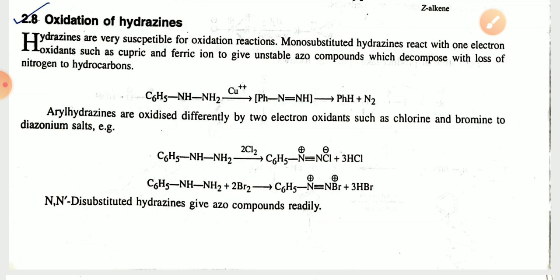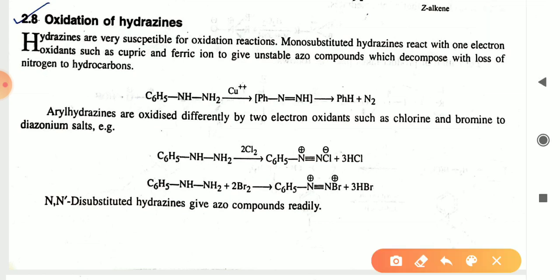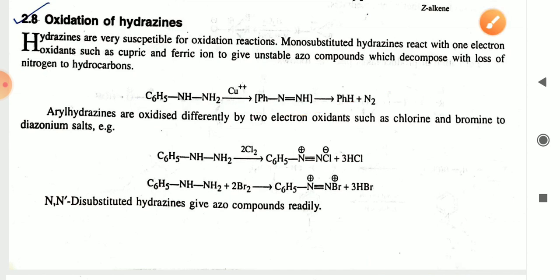The one-electron oxidation gives an unstable azo compound which decomposes with the loss of nitrogen to give the hydrocarbon. Here you can see that phenyl hydrazine in the presence of Cu²⁺ will give the unstable azo compound, which after losing nitrogen gives the hydrocarbon.